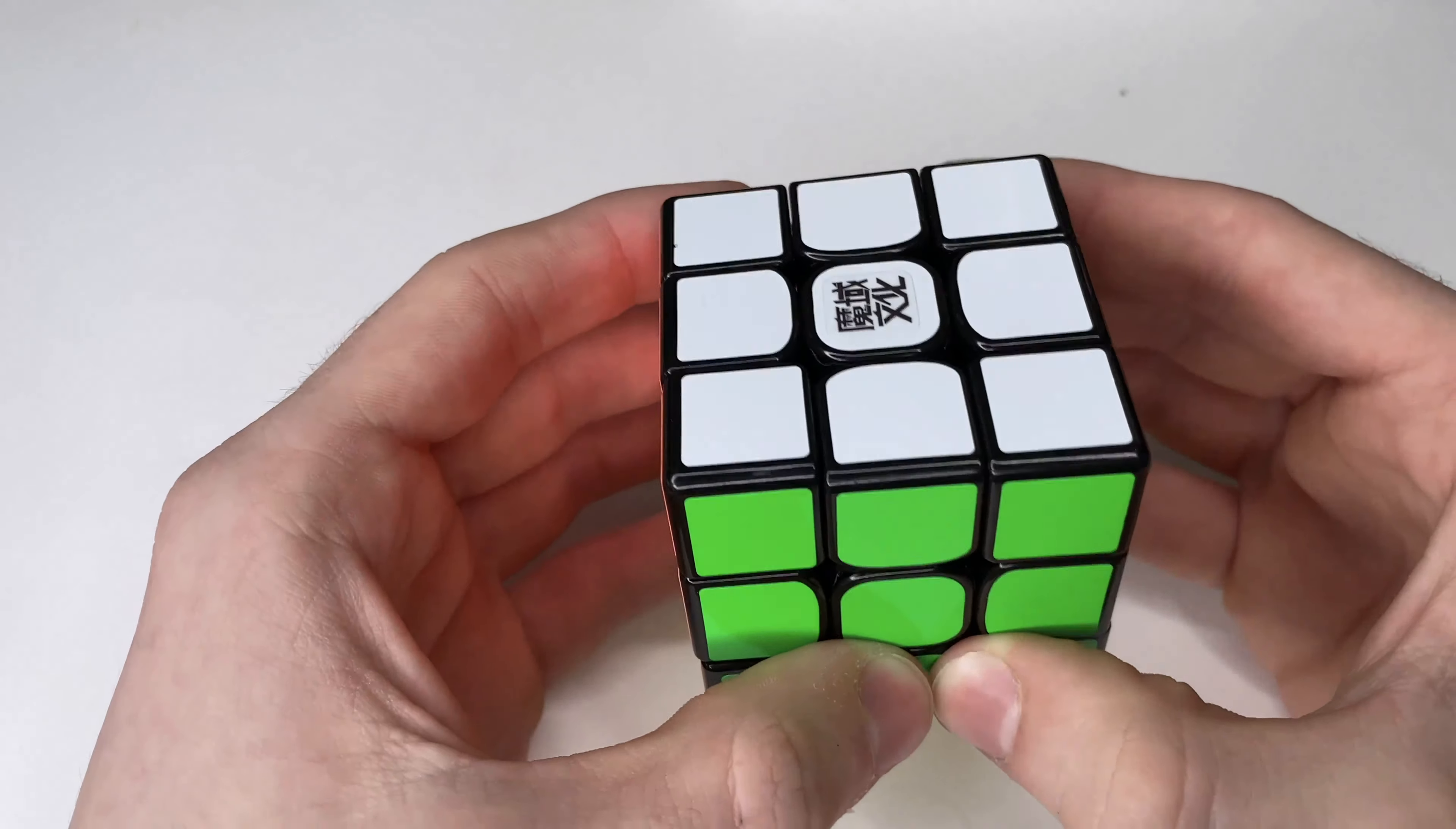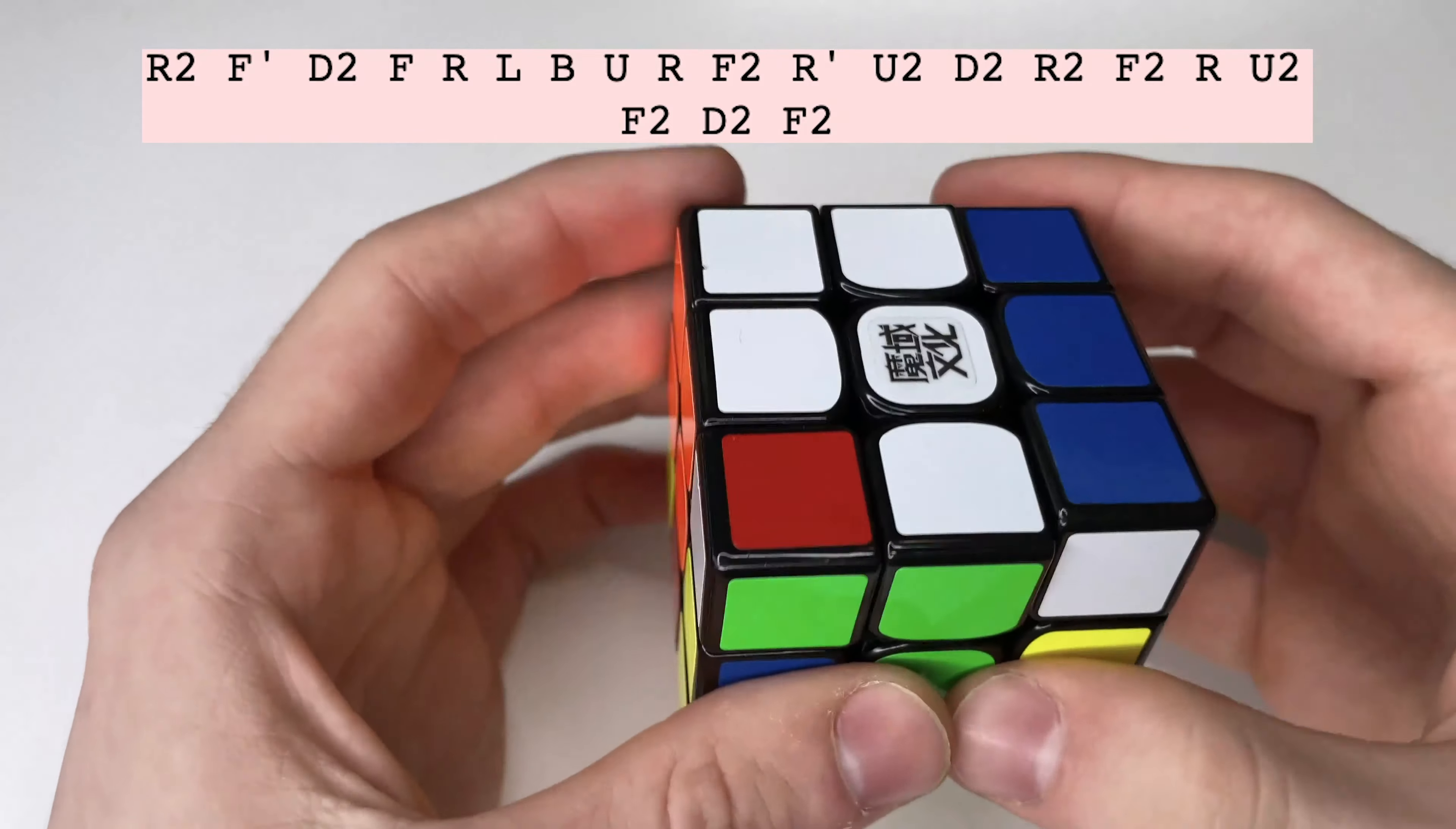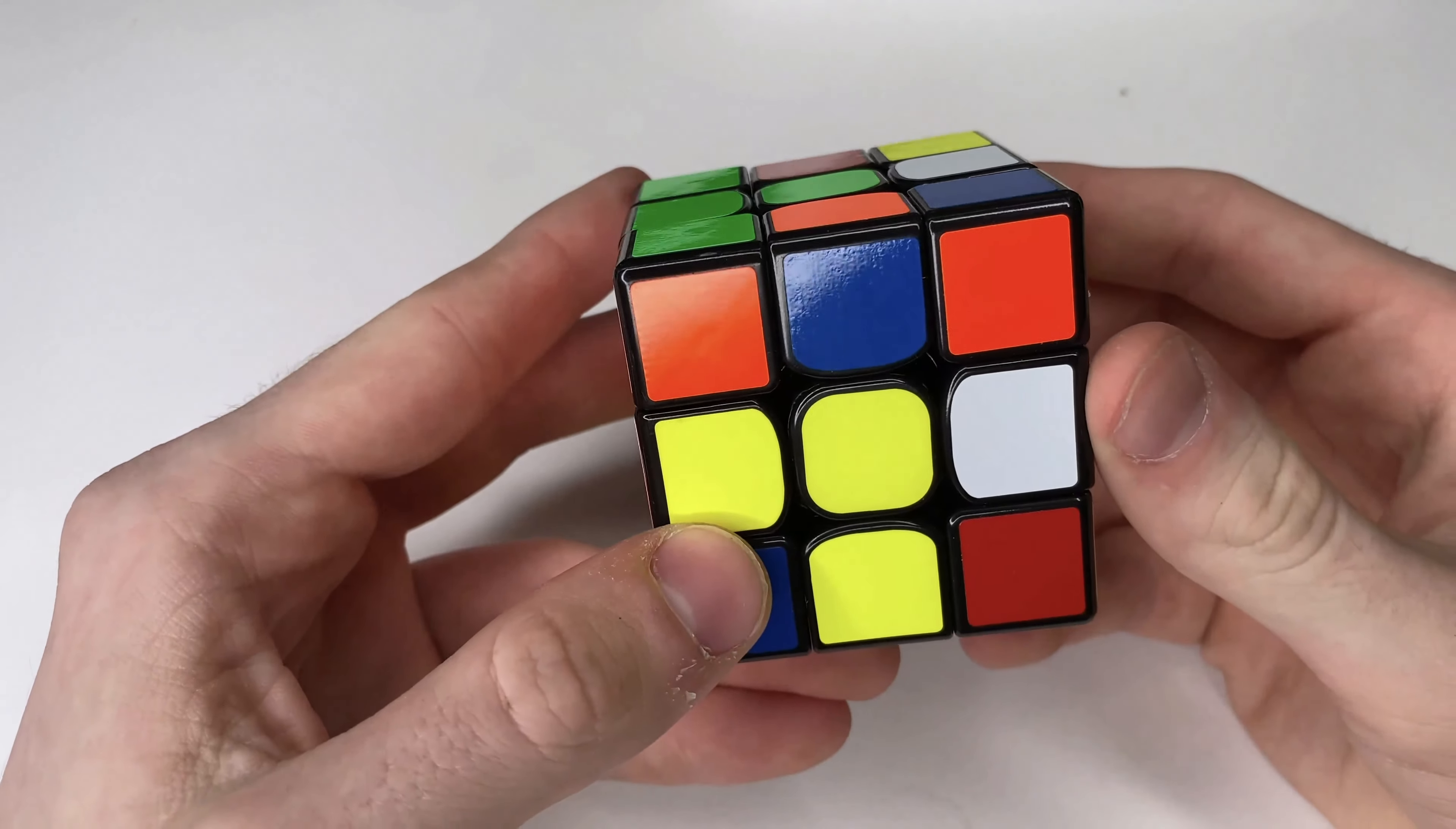Alrighty guys, so then the second scramble, I'll put it up right here. I'm not going to read it out this time. You guys can just pause it and then you just see what I get. Alright, so this is what I got, green in front, white on top.